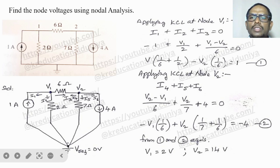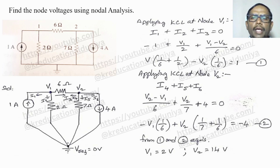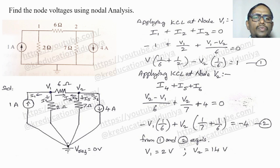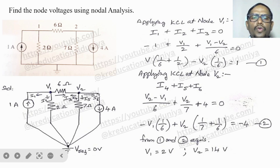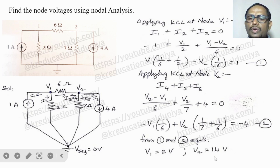Simplify and write the equation in standard form. Then applying KCL at node V2: I4 + I5 + I6 = 0. I4 is the current from V2 to V1, so (V2 - V1)/6, plus V2/7. The I6 assumed current and the 4 amp current source are in the same direction, so put plus 4, giving (V2 - V1)/6 + V2/7 + 4 = 0. Solving these two equations gives V1 = 2 volts and V2 = 14 volts.